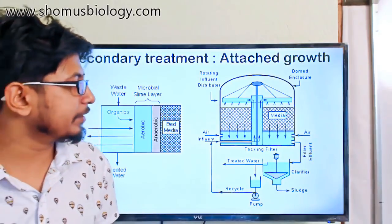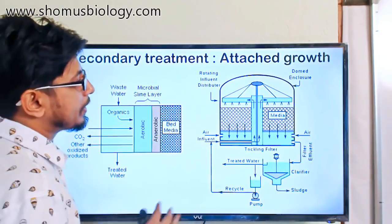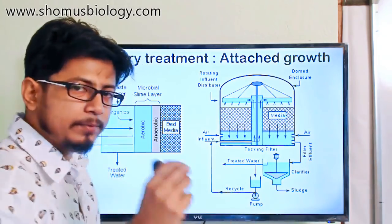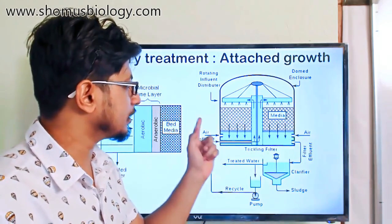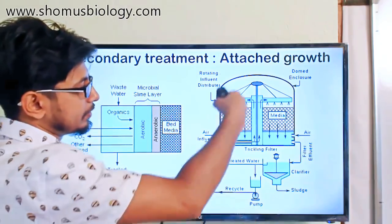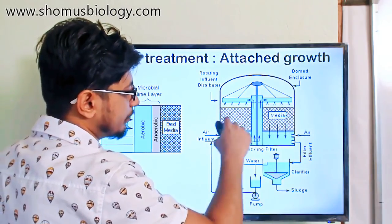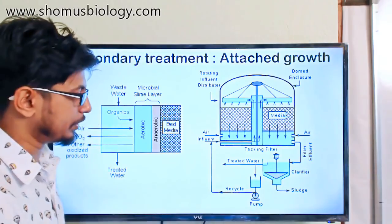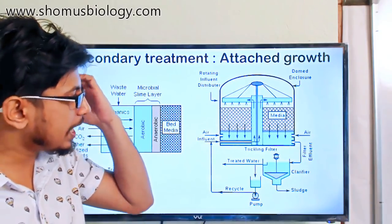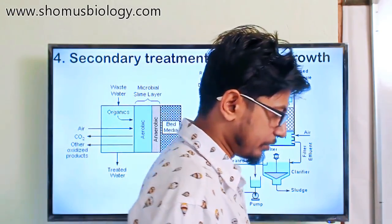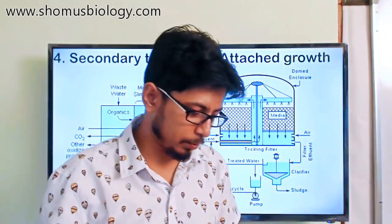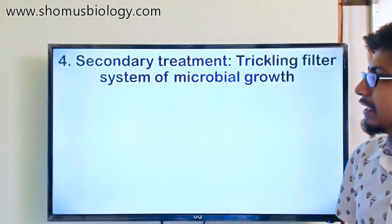In the secondary clarifier tank, there is a solid media bed, a rotor, and a pipe with pores through which water is sprinkled on top of the bed medium. Air is continuously provided and microorganisms forming a biofilm on the bed take up all the nutrients. The floc and sludge produced settle to the bottom and are transferred to the primary sediment tank again to continue the process, before finally going to the solids handling facility.